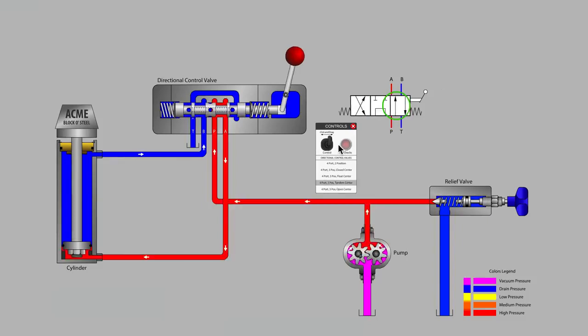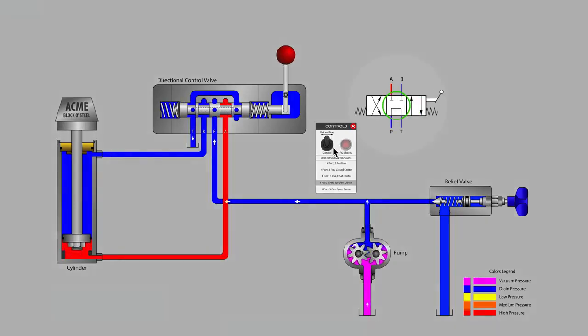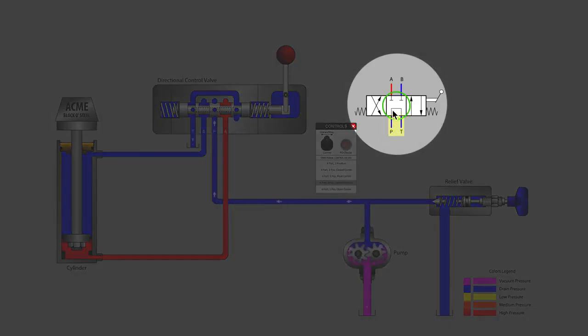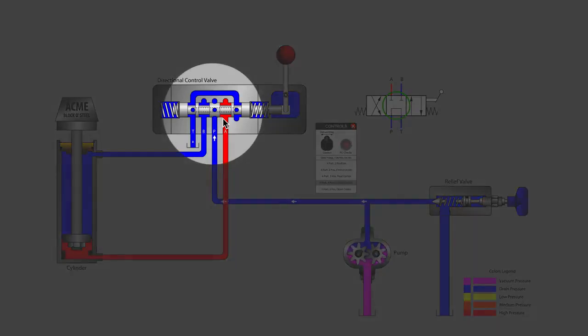Let's start with the tandem center valve. In the symbol, P is shown connected to T, while the A and B work ports are blocked. Looking at the cutaway, we see that the A and B work ports are indeed blocked in the spool undercuts and that cylinder position holding is possible. P is connected to T via a drilled and bored valve spool.